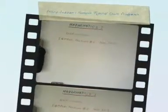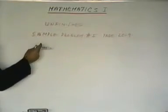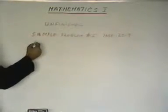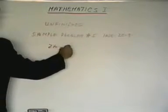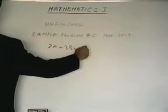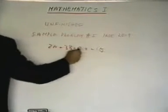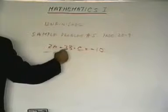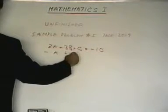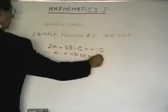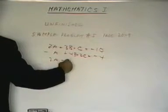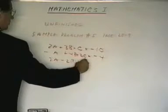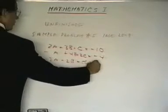All right, the part of the unfinished business is sample problem number 5 on page 20-9, and that problem indicated we had three equations: 2a plus 3b minus c is equal to minus 10, minus a plus 4b plus 2c is equal to minus 4, and 2a minus 2b plus 5c is equal to 35.